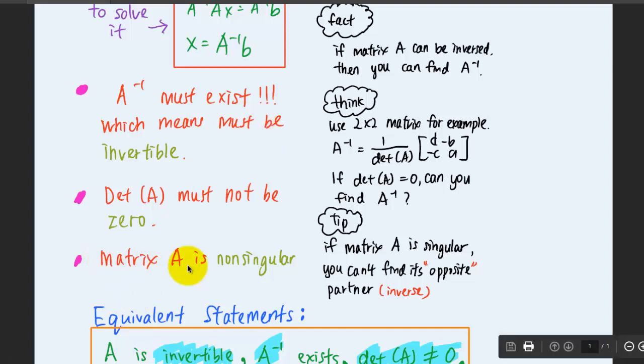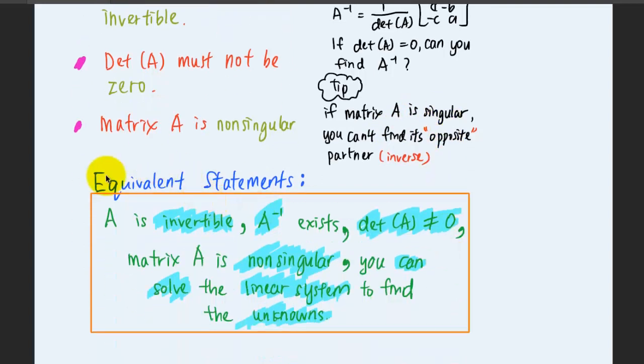Besides that, the matrix A is non-singular. Just think about it. If matrix A is singular, you can't find its opposite partner, which is the inverse.